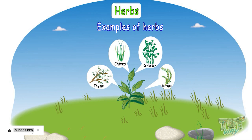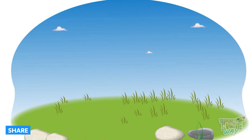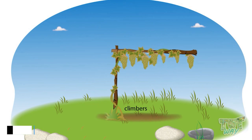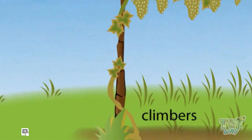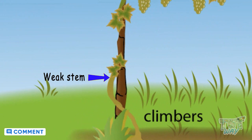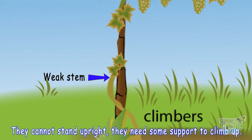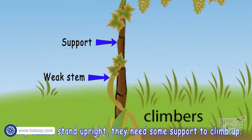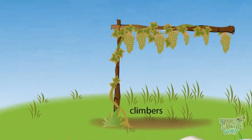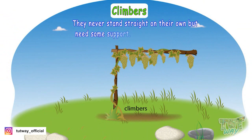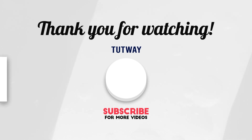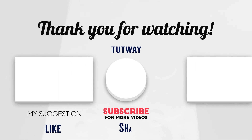Now let's see some climbers. Climbers are plants that have very weak stems and they cannot stand on their own — they need support to climb up and are called climbers. That is, they never stand straight on their own but need some support.